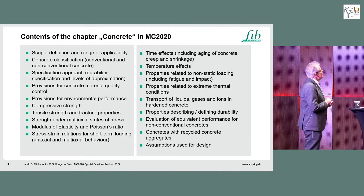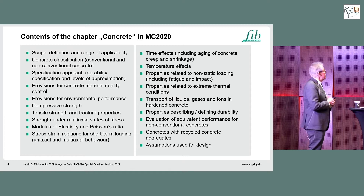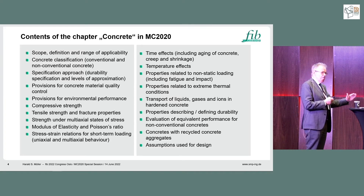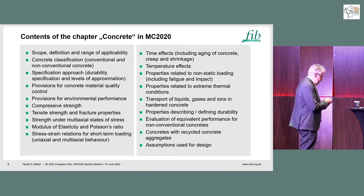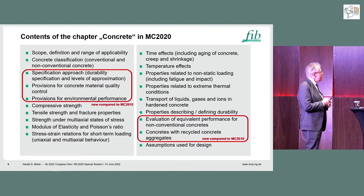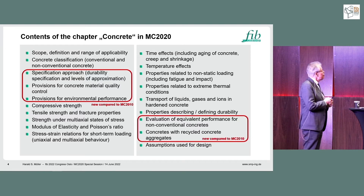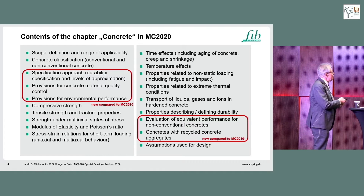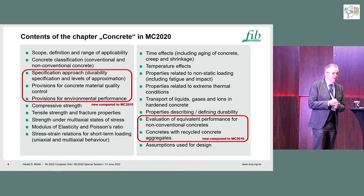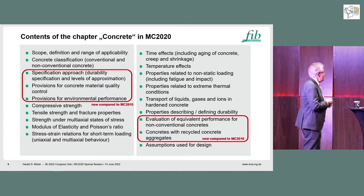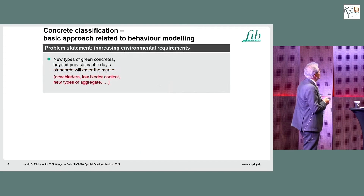Here is the list of contents of Chapter 14 on concrete in Model Code 2020. I won't go through all the sub-chapters now, which cover constitutive modeling, material modeling, and durability modeling. I'll just highlight the new ones compared to Model Code 2010: a specification approach for durability, provisions for concrete material quality, provisions for environmental performance, evaluation of equivalent performance for non-conventional concrete, and concrete with recycled aggregates. I've selected just a few aspects to highlight within our limited time.